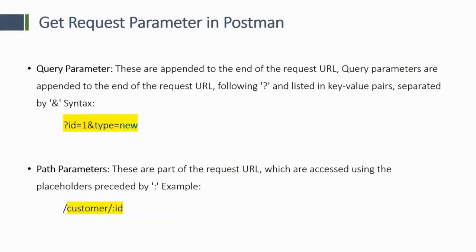GET request parameters means that when you send requests, you can send some data, some values, some parameters along with them. For example, suppose I need employee details whose ID is 104. So when I send that request, I will send it with the 104 data. That data sent along with the request is called the request parameter.